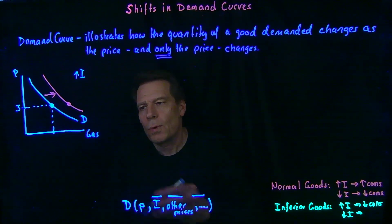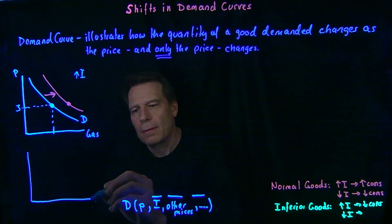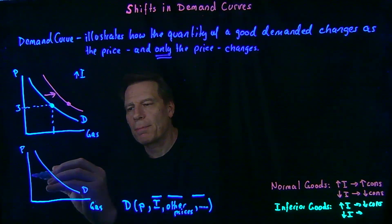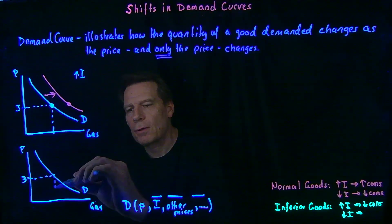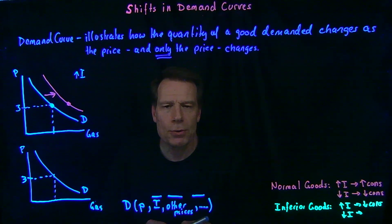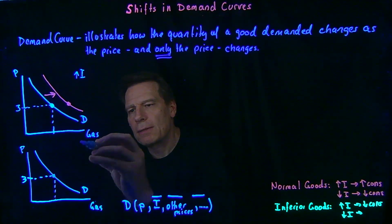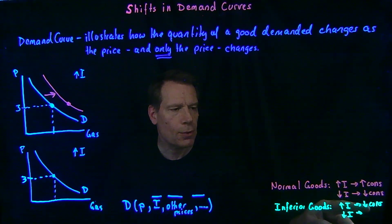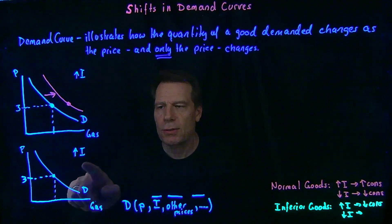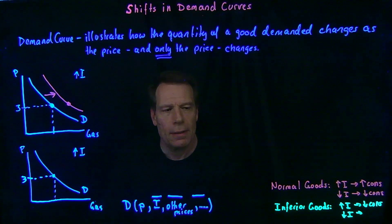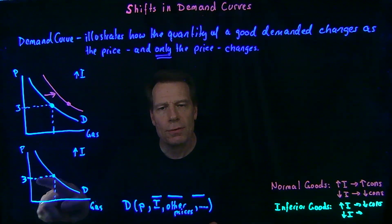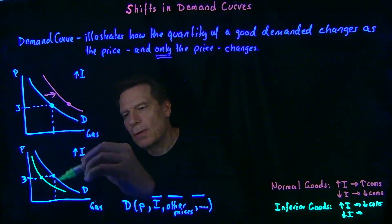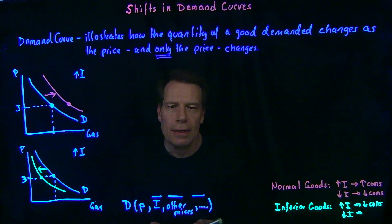Suppose gasoline was an inferior good — what would happen to the demand curve? We can redraw our initial demand curve at the initial income. Suppose again the price was $3 and our initial demand curve told us how much gasoline we'd consume per week. Now suppose income increases and gasoline is an inferior good. For an inferior good, an increase in income causes a decrease in consumption. So if the price doesn't change and only income increases, that point is going to shift to the left, and the whole demand curve will shift to the left.